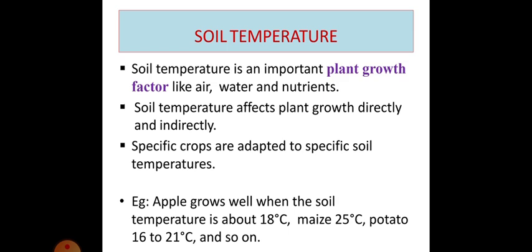Specific crops are adapted to specific soil temperatures. For example, apple grows well when the soil temperature is about 18 degree Celsius, maize 25 degree Celsius, potato 16 to 21 degree Celsius and so on.